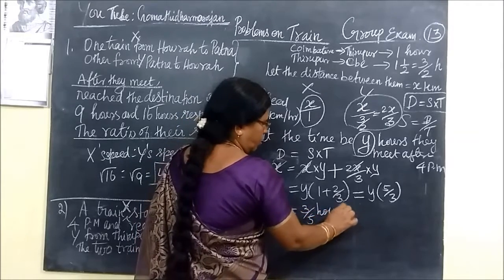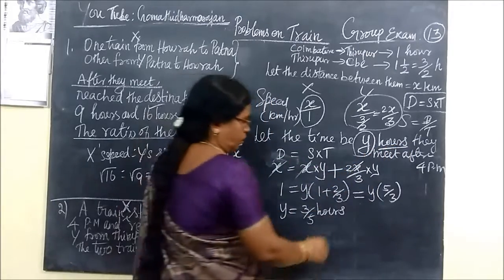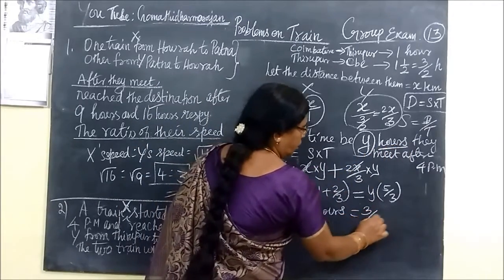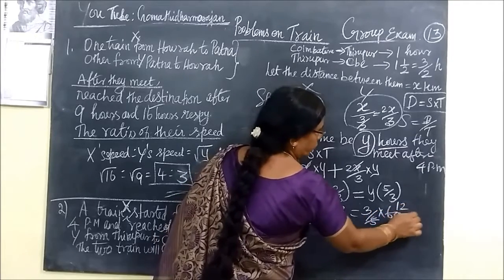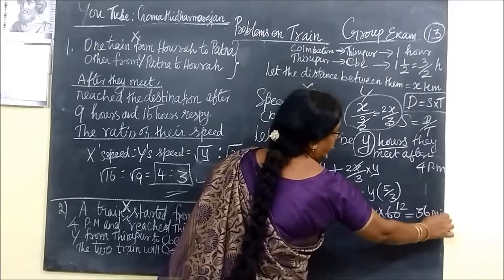Now what? What is it? Earth. The unit is Earth. So in the minute time mass room 3 by 5 into 60. So this is 36 minutes.